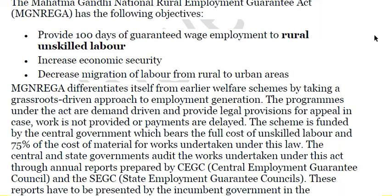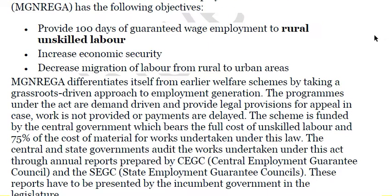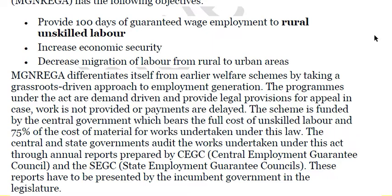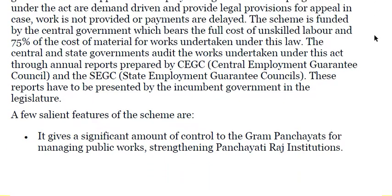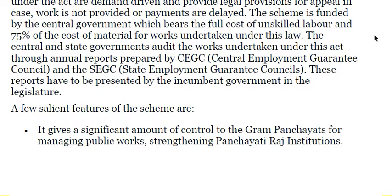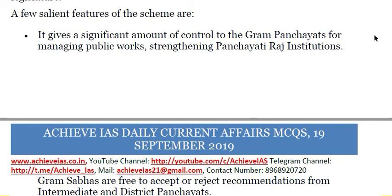Earlier welfare programs were paternalistic in approach and everything was centralized. Here, work is provided on the basis of demand, and if work is not available, legal remedy is available. The scheme is funded by the central government, which bears the full cost of unskilled labor and 75 percent of the cost of material for works undertaken under this law. Central and state governments audit the works through annual reports prepared by the Central Employment Guarantee Council and State Employment Guarantee Councils, which must be presented in the legislature.